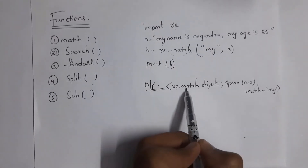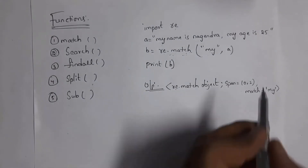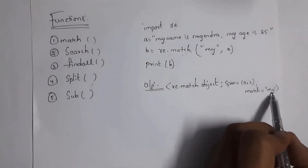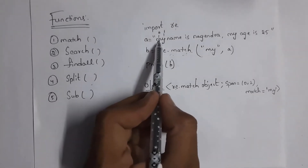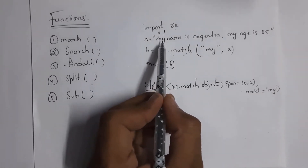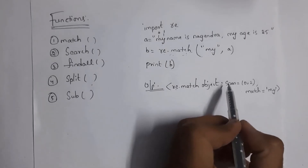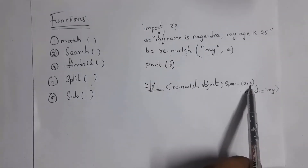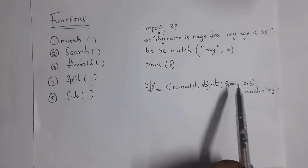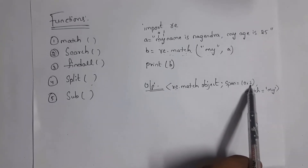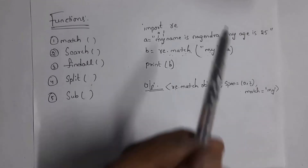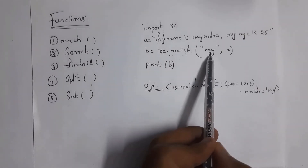When you write print(b), you will get output: re.match object, span=(0, 2), match='my'. That means we found a match — 'my' — at index 0 to 2, where 'm' is at index 0 and 'y' at index 1. It adds plus one to the last index, so span is (0, 2) and match is 'my'.